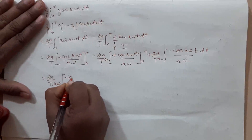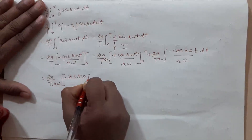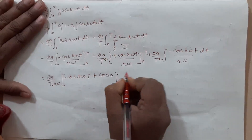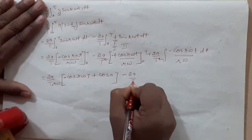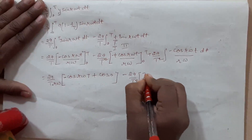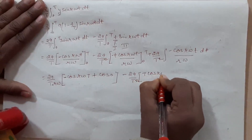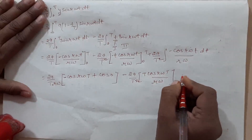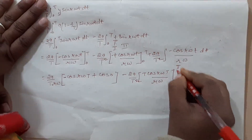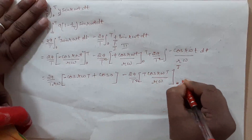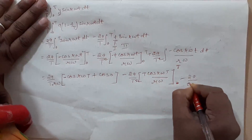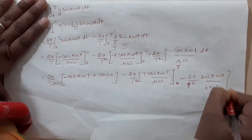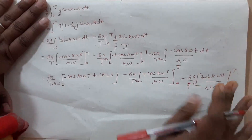Then minus cos(rωt) minus minus plus cos(t), then minus 2a by t squared, t·cos(rωt) upon rω. Limit minus 2a upon t squared, sine(ωt) upon ω squared, z·mc·t upon rω.